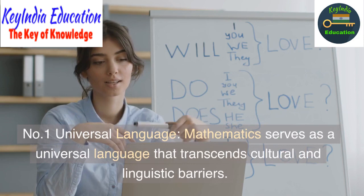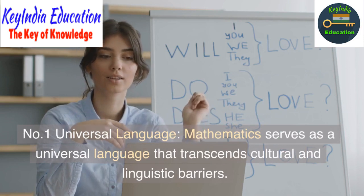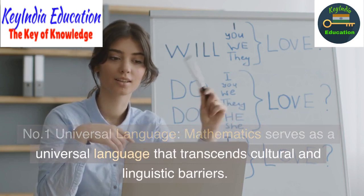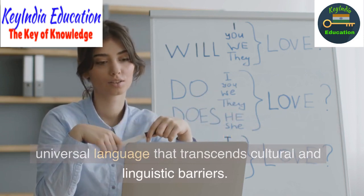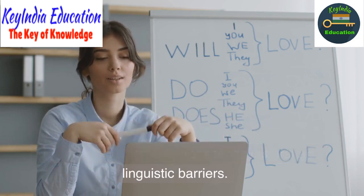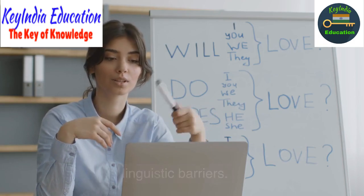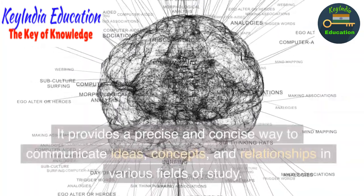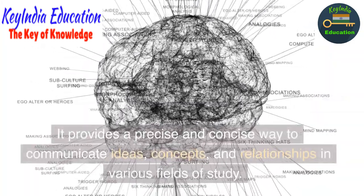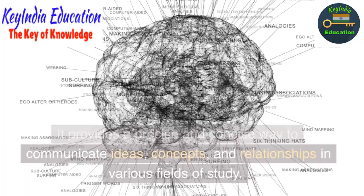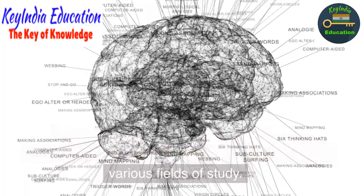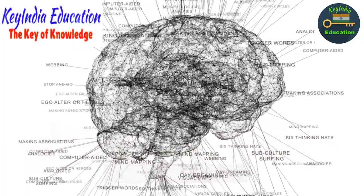Meaning of mathematics. Number one: universal language. Mathematics serves as a universal language that transcends cultural and linguistic barriers. It provides a precise and concise way to communicate ideas, concepts, and relationships in various fields of study.